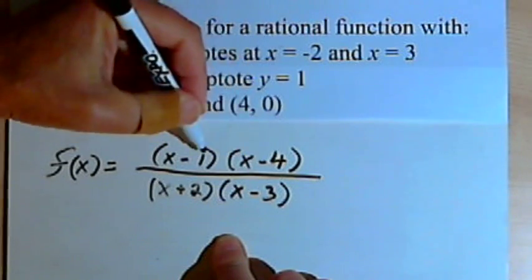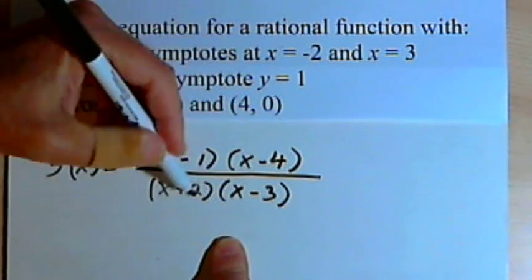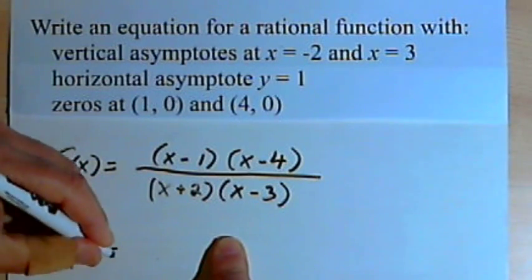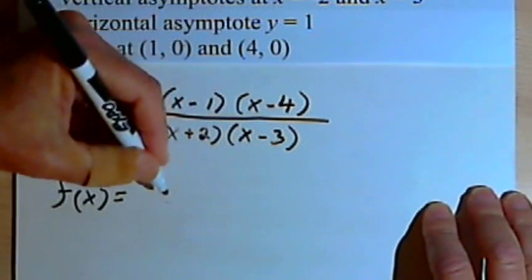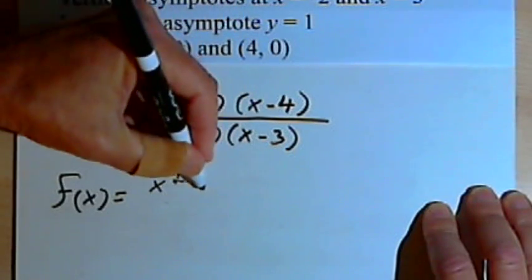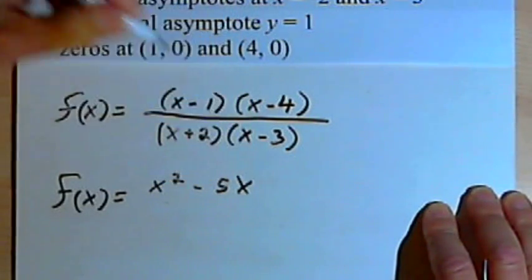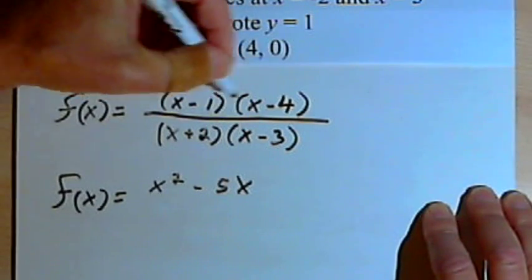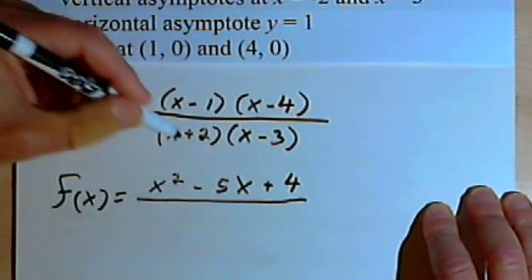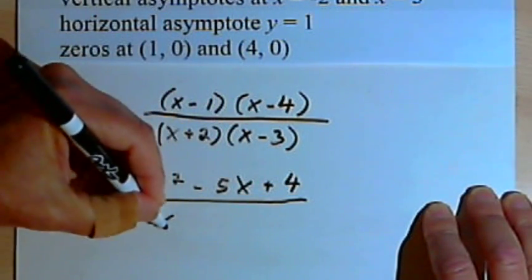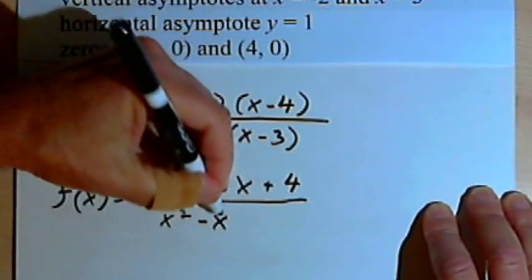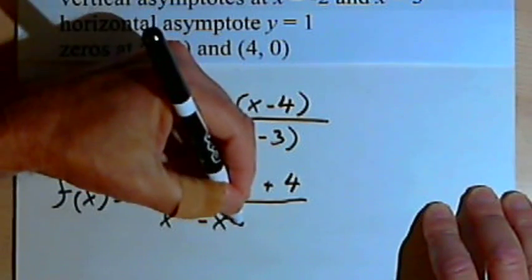Now let's take the numerator binomials and multiply those out, and do the same for the denominator. So f equals — x times x is x squared, I've got negative 4x and negative 1x so that's minus 5x, and negative 1 times negative 4 is positive 4. For the denominator, I've got x squared, 2x minus 3x is negative x, and 2 times negative 3 is negative 6.